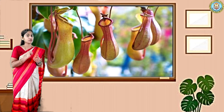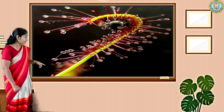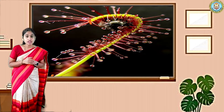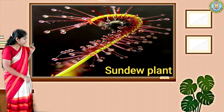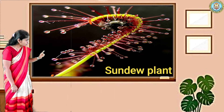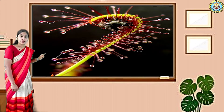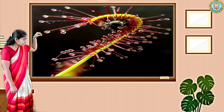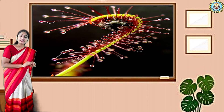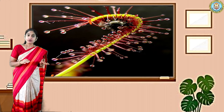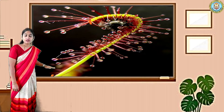Here is another example of an insectivorous plant — that is the sundew. See very carefully, there are small needle shapes on it. Whenever any insect sits on this plant, the insect immediately dies and is eaten by this plant.